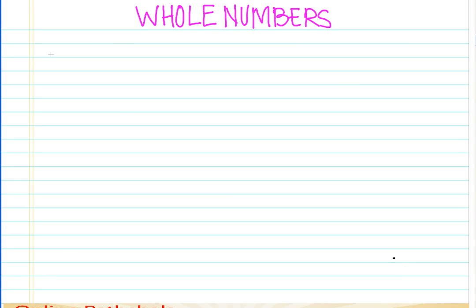Hello and welcome to the discussion on whole numbers. Let's say your teacher comes into class and asks someone to count how many students are there. What would you do? You would start counting: one, two, three, four, and so on. If you observe this phenomenon of counting closely — the natural counting — it starts from the number one and then we proceed to two, three, four, and so on.